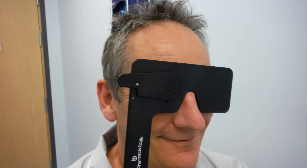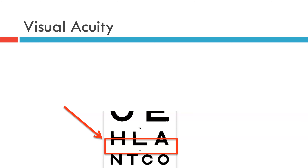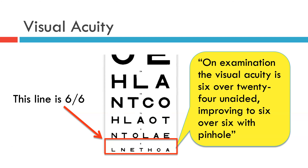Next, the visual acuity is tested with a pinhole. Here we see a series of pinholes being used on this proprietary occluder, but a simple hole made in a piece of card would suffice equally to get this information. The patient's visual acuity with a pinhole improves all the way down to the bottom line, which on this chart carries the number 6, but on feet and inches charts would carry the number 20. You can now say: on examination the visual acuity is 6 over 24 unaided, improving to 6 over 6 with pinhole. This is the conventional wording to communicate the patient's vision to fellow medical professionals.